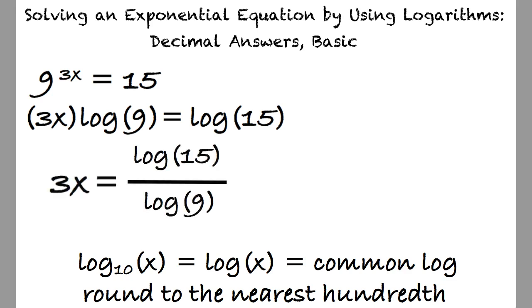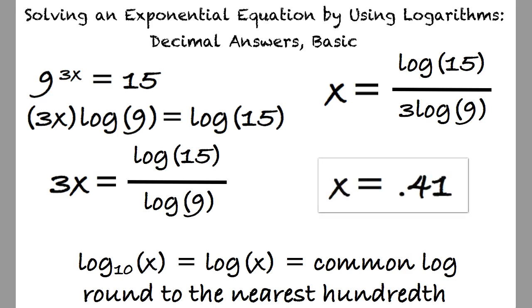This yields 3x equals log of 15 divided by log of 9. We can further simplify this equation by dividing both sides by 3, yielding log of 15 divided by 3 times log of 9. Inputting this equation into the graphing calculator results in x equals 0.41 after rounding to the nearest hundredth.